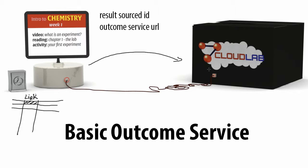So now as a tool provider, I have a location to identify an outcome container on the tool consumer side, and I have a URL to post it back. The only thing I need to know is what exactly is the format I need to send to this URL. This Basic Outcome Service was done some time ago and it's still using an XML construct — specifically, commands in XML. You have three kinds of commands you can do.